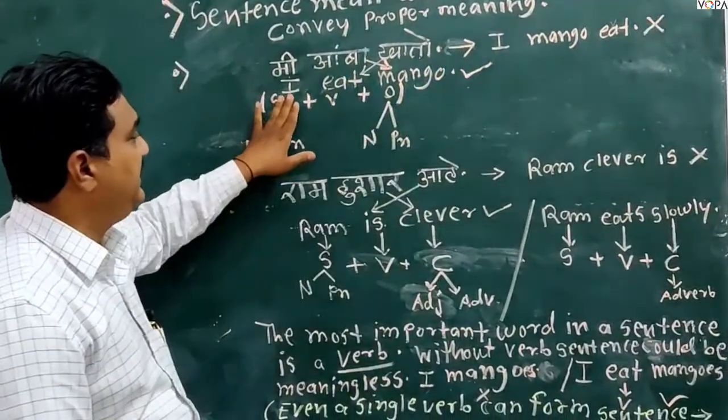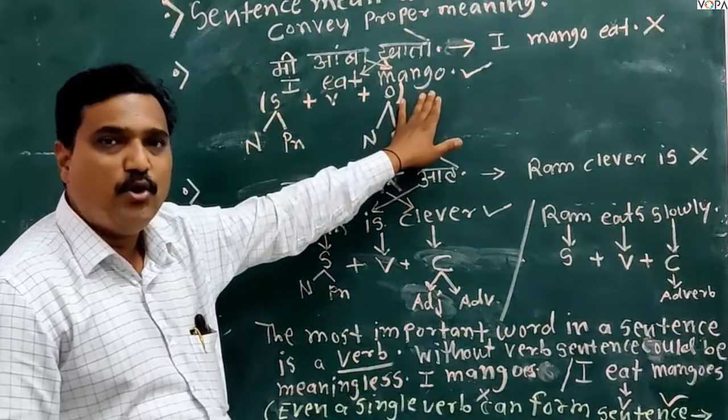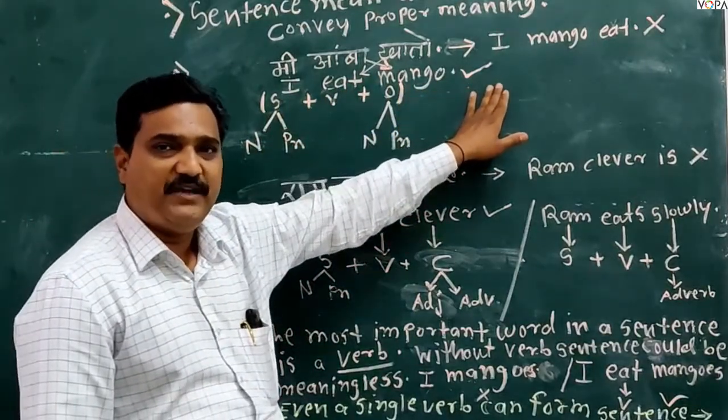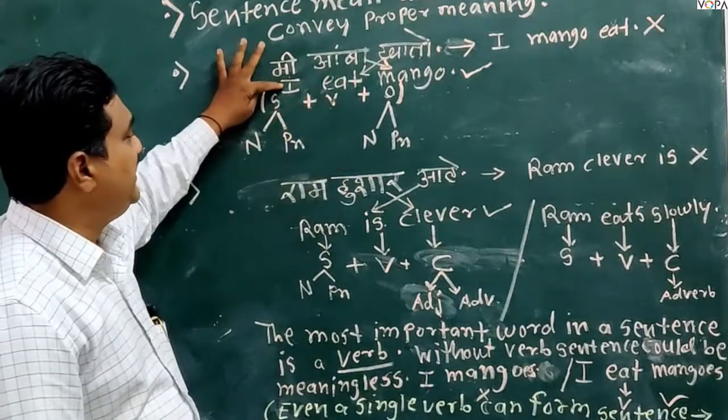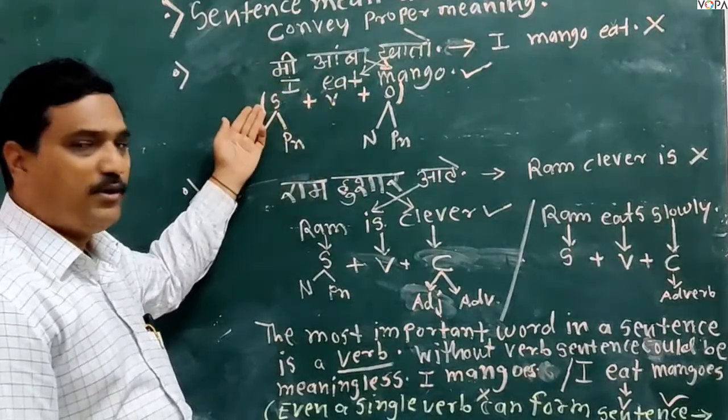The correct sentence formation is I need mango. This is sentence formation of English because word, it is a word, so kriya is called object. It will come before word.